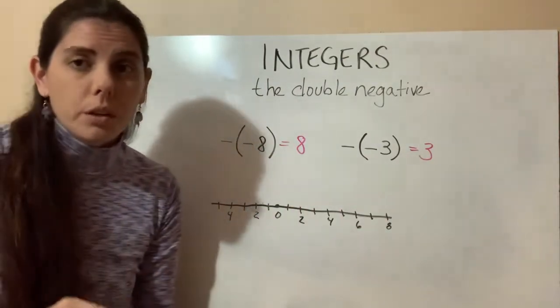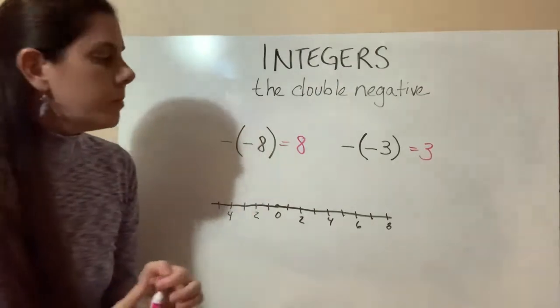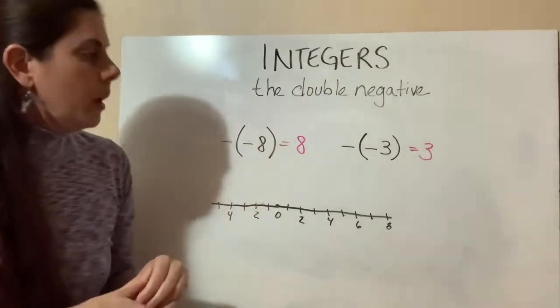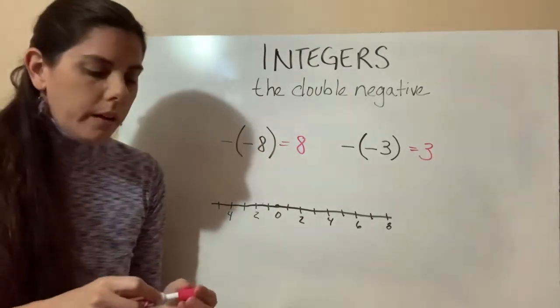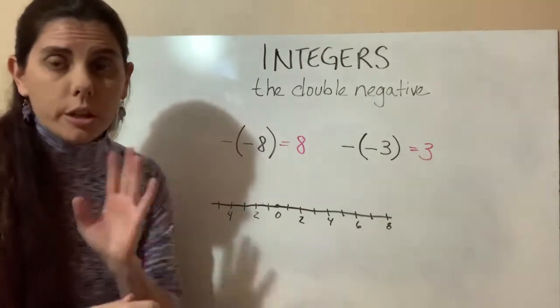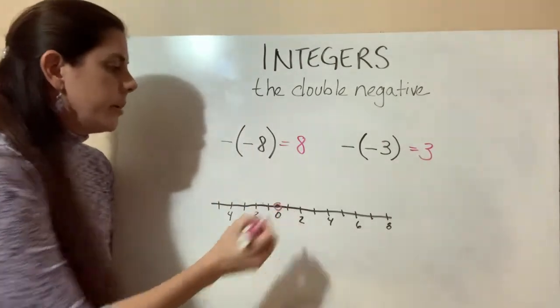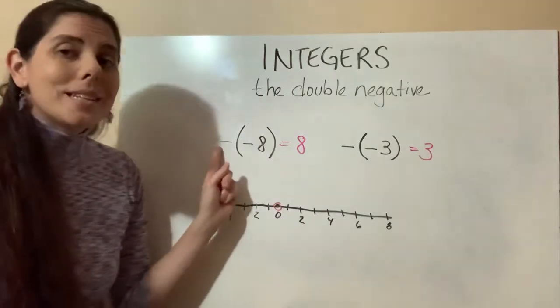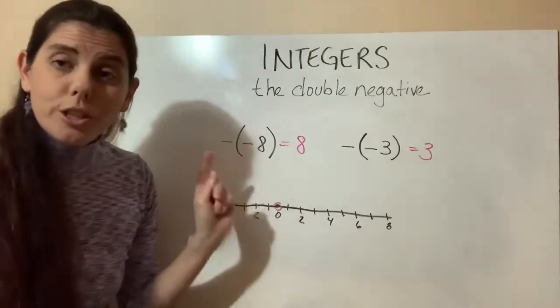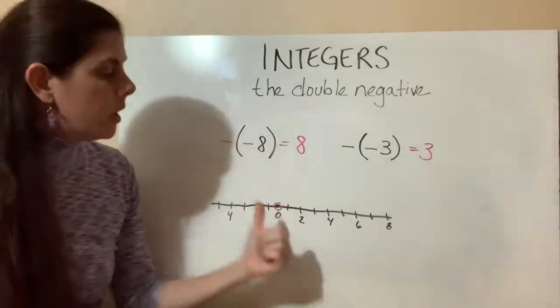There's a couple different ways you can look at it, and I'm going to try to touch on both of them. When we're looking at integers, our starting point is always zero. We're going to start at zero, and then the sign tells us which direction to go.